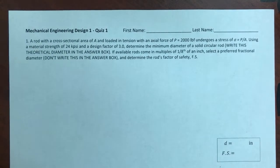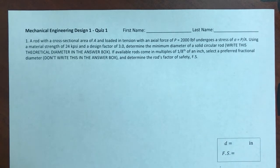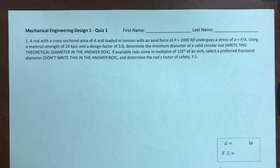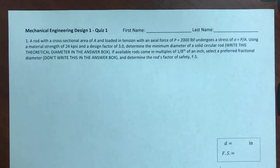Problem one. A rod with a cross-section area of A, loaded in tension with an axial force of P equals 2,000 pound-force, undergoes stress of sigma = P over A. Using a material strength of 24 ksi and a design factor of 3, determine the minimum diameter of a solid circular rod.